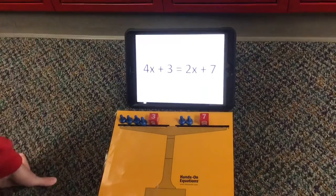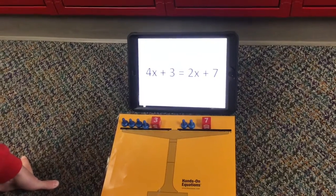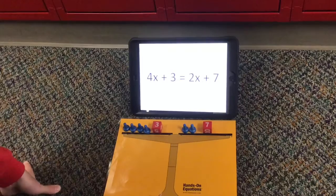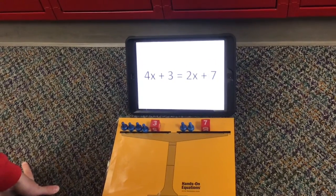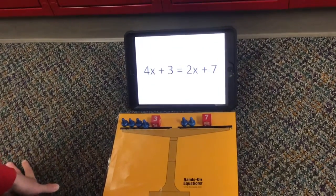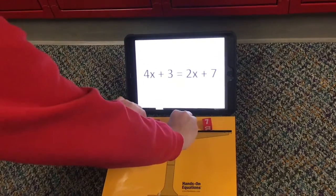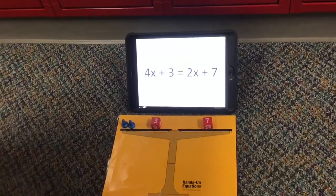My first problem is 4x plus 3 equals 2x plus 7. So first we're going to take away white things from each side using our legal moves. We're going to take away two blue pawns because they cancel each other out.